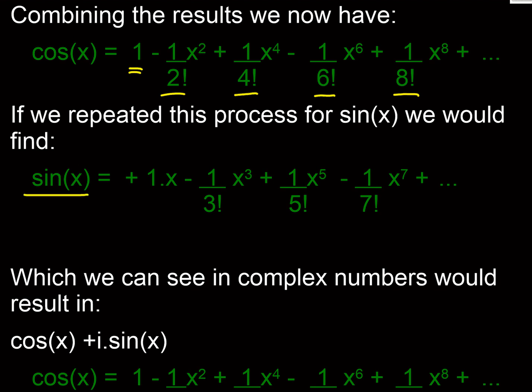The first term f(0) is going to be 0 because sin of 0 is 0, and when we differentiate that we end up with plus cos.